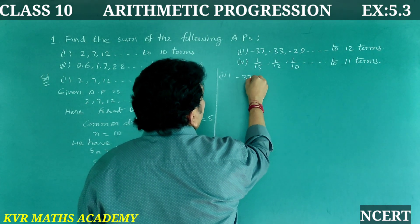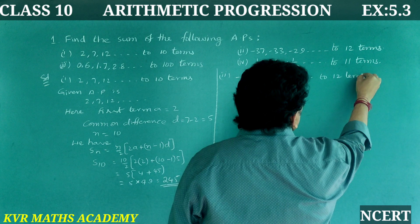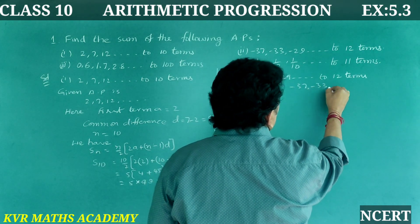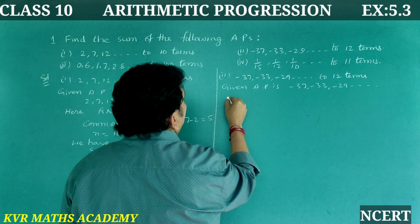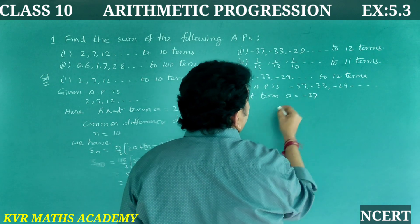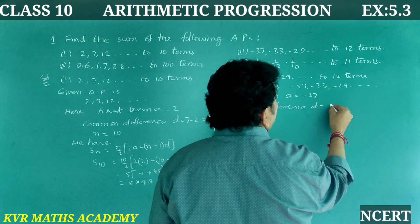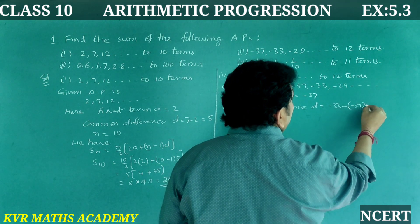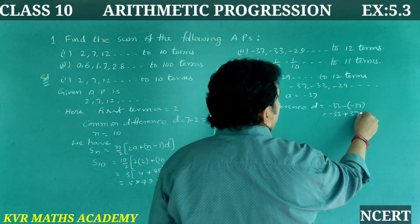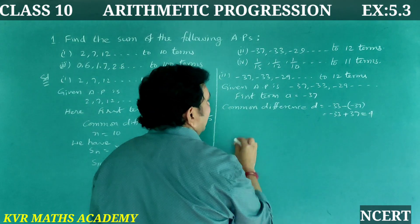Second AP: −37, −33, −29, and so on for 12 terms. Given AP is −37, −33, −29, and so on. First term a = −37. Common difference d = a₂ − a₁ = −33 − (−37) = −33 + 37 = 4. So n = 12.